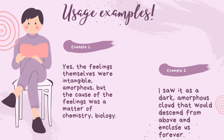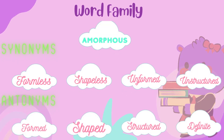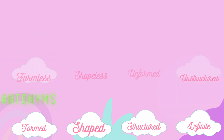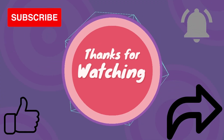...that would descend from above and enclose us forever. Word family: amorphous does not have a word family. Synonyms: formless, shapeless, unformed, unstructured. Antonyms: formed, shaped, structured, definite.